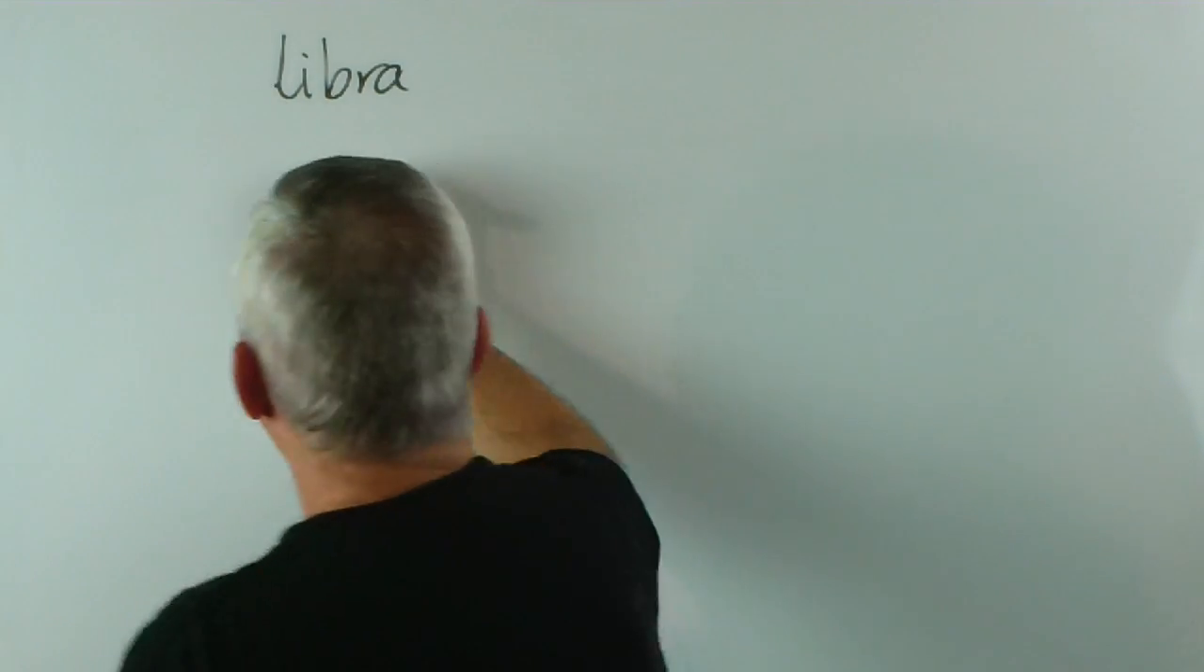Of course, if you saw the previous video, you understand that Libra, it's one of the signs of the Zodiac, means the scales for weighing and it was a weight of a pound of silver. So, the plural was Librae.